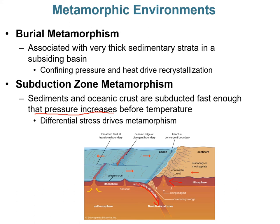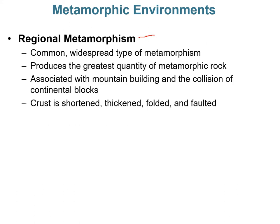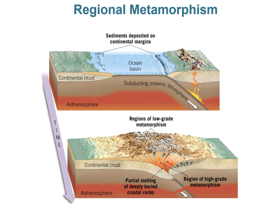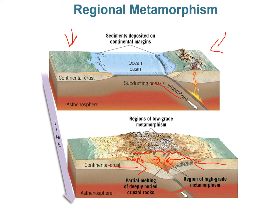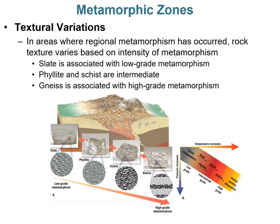The most widespread type is regional metamorphism, which produces the most metamorphic rock and is associated with mountain building and collision of continental blocks. The crust becomes shortened, thickened, folded, and faulted. For example, the collision of the Indian and Eurasian tectonic plates formed the Himalayas. This produces an array of low-grade metamorphic rocks on the outskirts and high-grade metamorphic rocks toward the roots of the mountains, due to increased pressure and temperature from the colliding continental blocks.